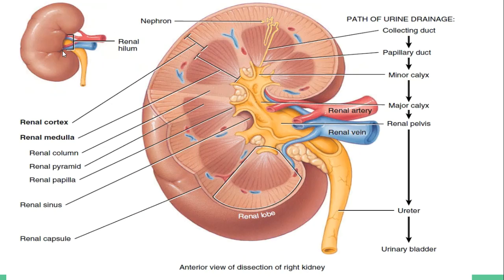In this anterior view of a dissection of the kidney, you can trace the path of urine drainage: from the collecting ducts, to the papillary duct, to the minor calyx, and then the major calyx. You can study the diagram and try to identify the path of urine drainage, noting the papillary duct, the minor calyx, and the major calyx.